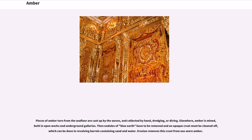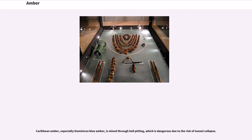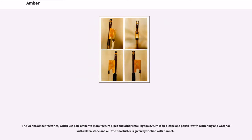Elsewhere, amber is mined both in open works and underground galleries. The nodules of blue earth have to be removed and an opaque crust must be cleaned off, which can be done in revolving barrels containing sand and water. Erosion removes this crust from sea-worn amber. Caribbean amber, especially Dominican blue amber, is mined through bell pitting, which is dangerous due to the risk of tunnel collapse. The Vienna amber factories, which use pale amber to manufacture pipes and other smoking tools, turn it on a lathe and polish it with whitening and water or with rotten stone and oil. The final luster is given by friction with flannel.